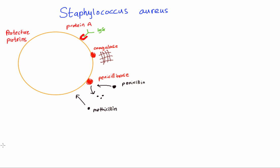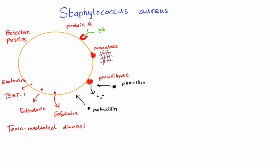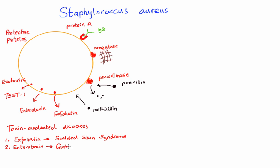Now for the three exotoxins. The first is exfoliatin, which causes scalded skin syndrome. The second is enterotoxin, which affects the GI tract and causes gastroenteritis. The third is TSST-1 — toxic shock syndrome toxin 1 — which causes a massive release of inflammatory cytokines and shock. These are the three diseases Staph aureus causes with its three different exotoxins.